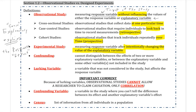Confounding means that you cannot distinguish between the effects of two or more explanatory variables. This happens pretty often — there are multiple variables influencing a system, but you're not really sure which one is causing the response variable to occur.